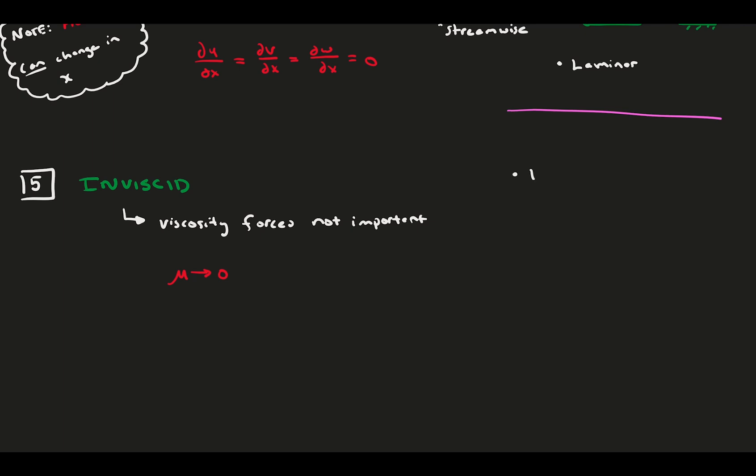Generally, you make this assumption when you have a high momentum flow, which means it can have a high velocity or be very large. When we discuss non-dimensional numbers in another video, we will discuss the Reynolds number, which applies here. Also, you need to be far away from a boundary. Boundaries are where boundary layers occur, which is caused by viscosity.